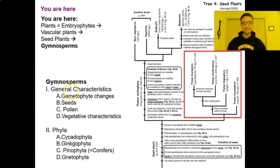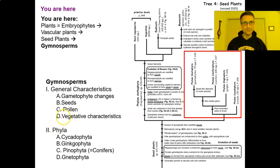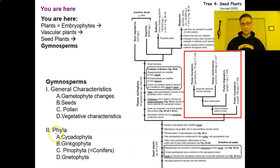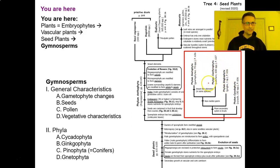We'll begin with some general characteristics, then think about how gametophytes have to change for seeds to evolve — bringing us to seeds and pollen. After some reproductive characteristics, we'll look at vegetative features. We'll then mention four major phyla: cycadophyta, ginkgophyta, coniferophyta (otherwise known as pinophyta — those are synonyms), and finally the gnetophytes.